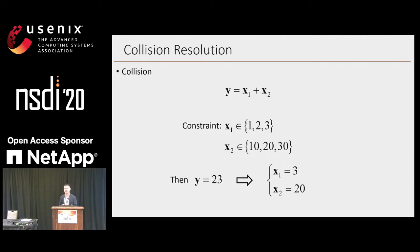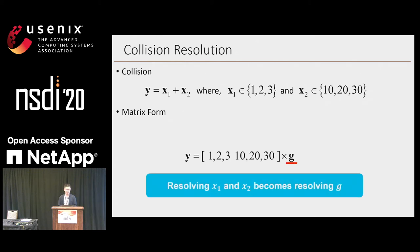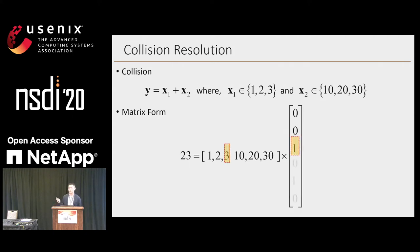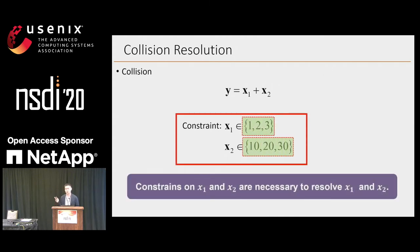So we solve it. We can use the two constraints, which are two sets, to build the matrix form. Then resolving X1 and X2 becomes resolving the column vector G. G is a sparse vector, so we can use compressive sensing to solve it, like this example. There are only two entries that are one, which means there are two transmitters identified as 3 and 20. The two constraints are very important for us to resolve this equation.